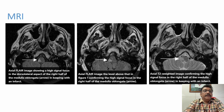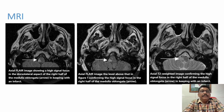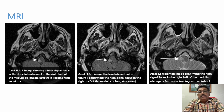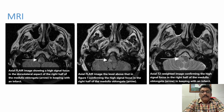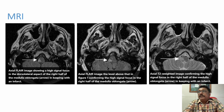You can see here the MRI finding — a high signal focus in the dorsolateral aspect of the right half of the medulla oblongata. The arrow marks show the ischemic problem there. MRI is very important when suspecting a case of lateral medullary syndrome.